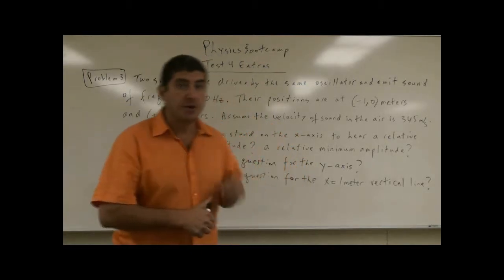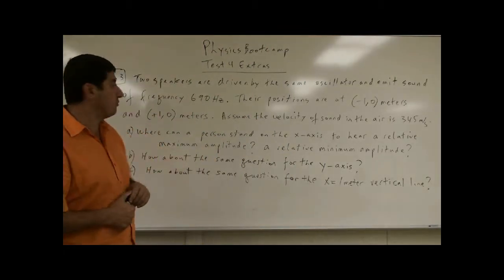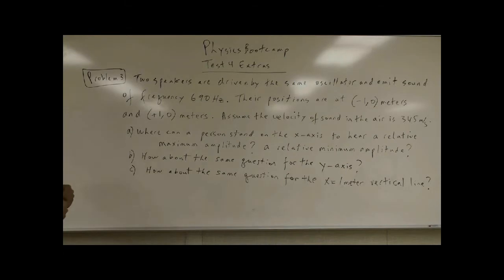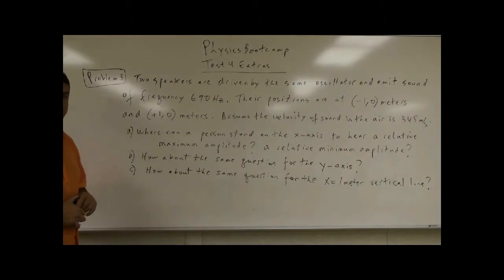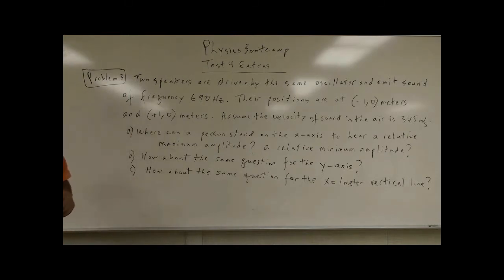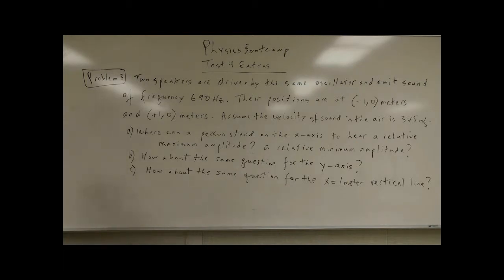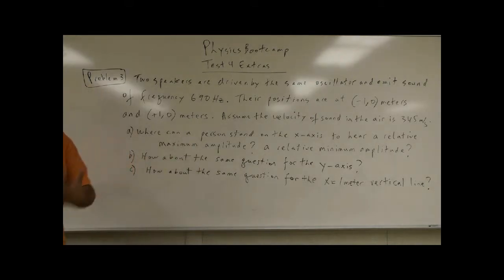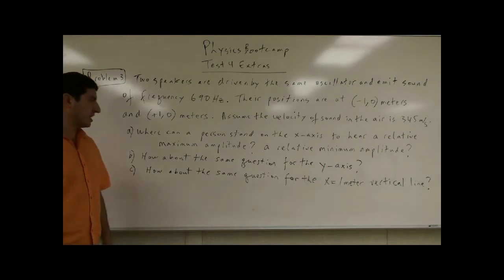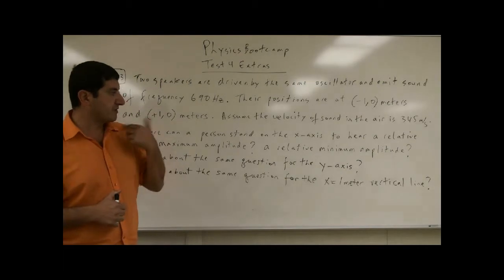Welcome back. We'll do one more problem for the test extras — problem three. Two speakers are driven by the same oscillator and emit sound of frequency 690 Hz. Their positions are at negative 1,0 meters and positive 1,0 meters. Assume the velocity of sound in air is 345 meters per second. The questions are: where can a person stand on the x-axis to hear a relative maximum and relative minimum amplitude? Same question for the y-axis, and for the vertical line x equals 1 meter.